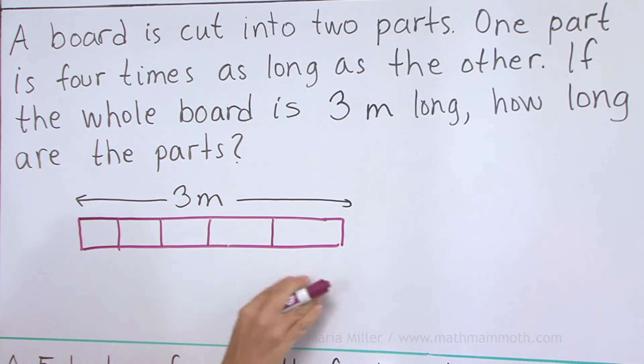Okay, well they are not equal here in my picture, but that is the basic idea. Now, the cut is made here, like that. So one part is here, and this longer part is four times that smaller part.